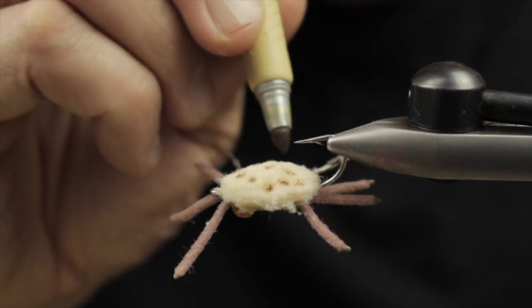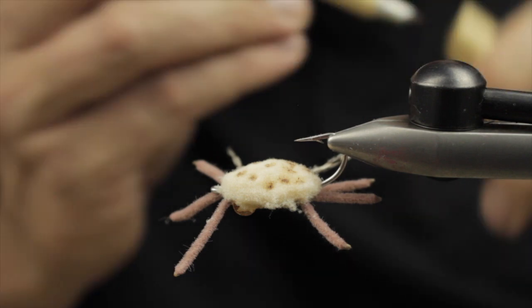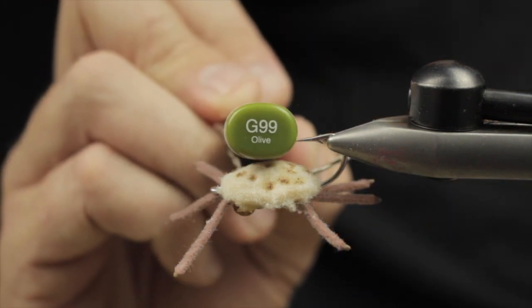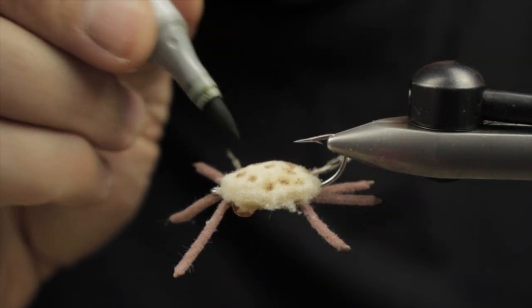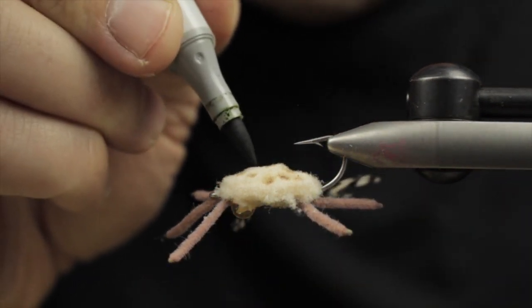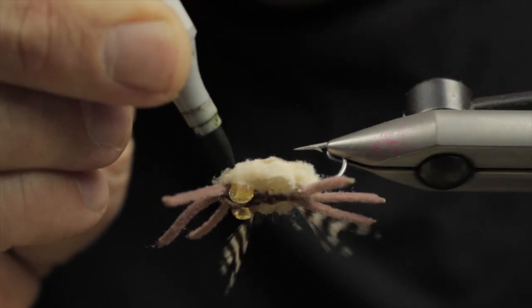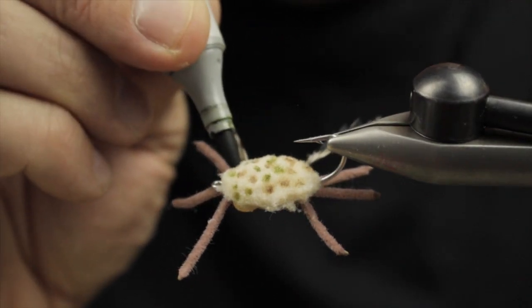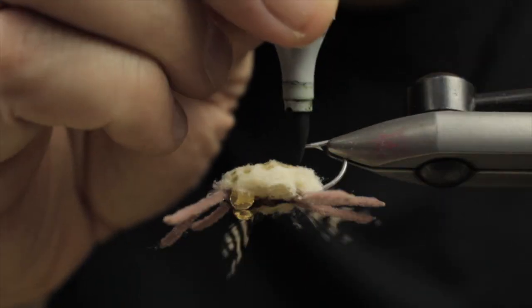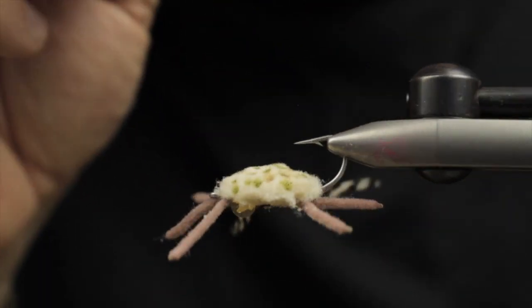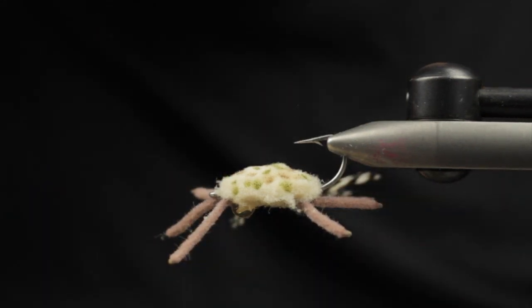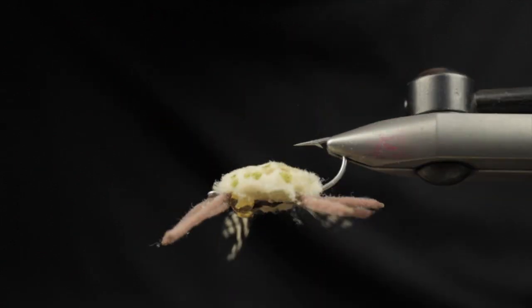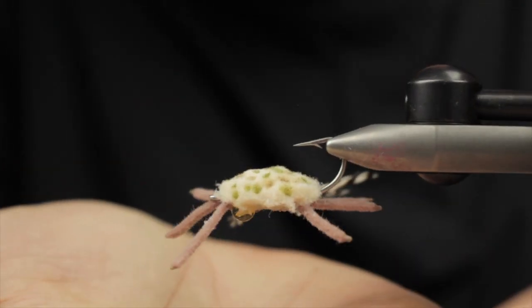I'm going to create some modeling with various permanent markers just to create some realism in this crab pattern. I do a tan and an olive color. You can manipulate this pattern to look however you want. It's a pretty generic version. Just look at pictures of crabs that live on the flats and go from there. There you see the UV bottom. And that's the Crusher crab. Thanks for watching.